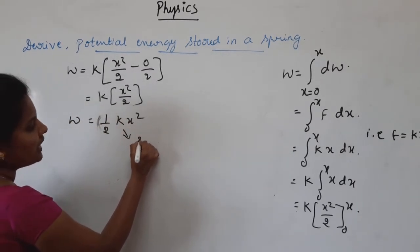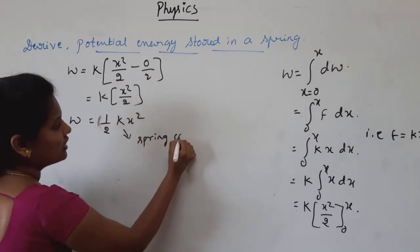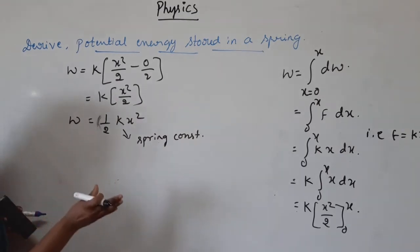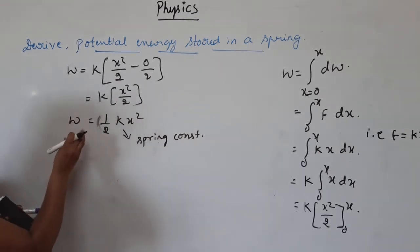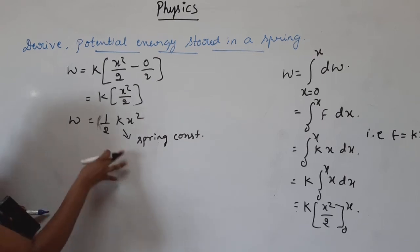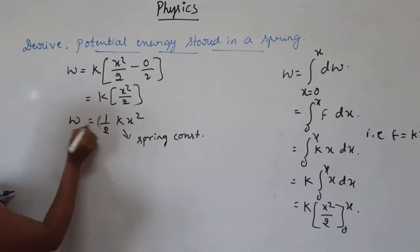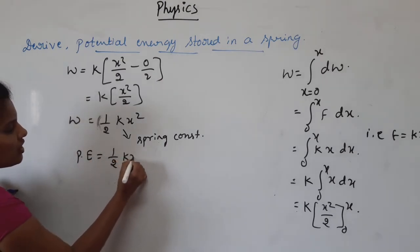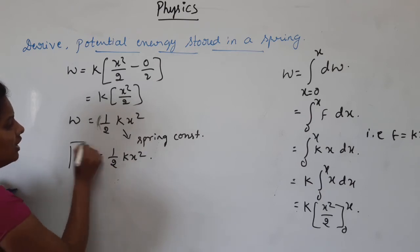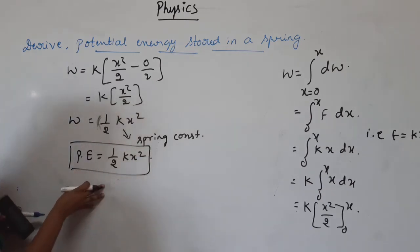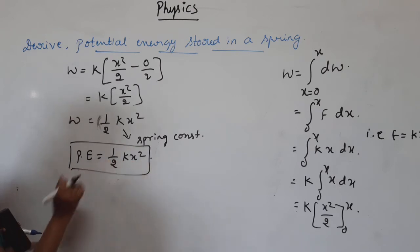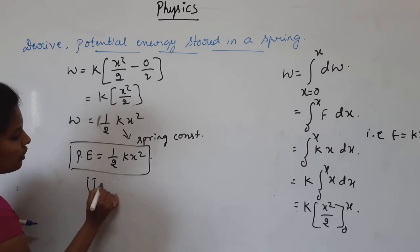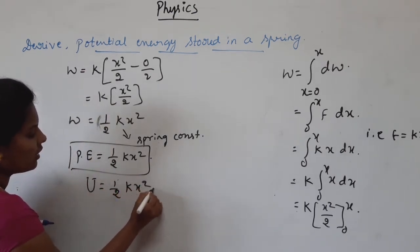Here K stands for the spring constant. The work done when the spring is stretched is stored in the form of potential energy in the spring. Therefore, potential energy U equals half KX squared. This is the potential energy stored in a spring.